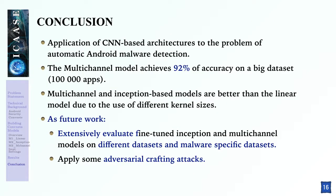At the end of this talk, I recapitulate the content. We have applied CNN-based architectures to the problem of automatic Android malware detection. The multi-channel model achieves 92% accuracy on a big dataset of 100,000 samples. The main lesson learned is that multi-channel and inception-based models are better than the linear model due to the use of different kernel sizes. As future work, we plan to extensively evaluate fine-tuned inception and multi-channel models on different and malware-specific datasets, and also to apply adversarial attacks on the enhanced models.